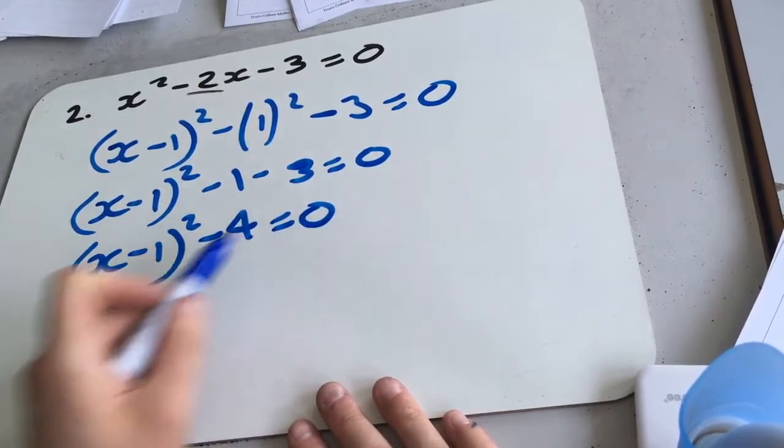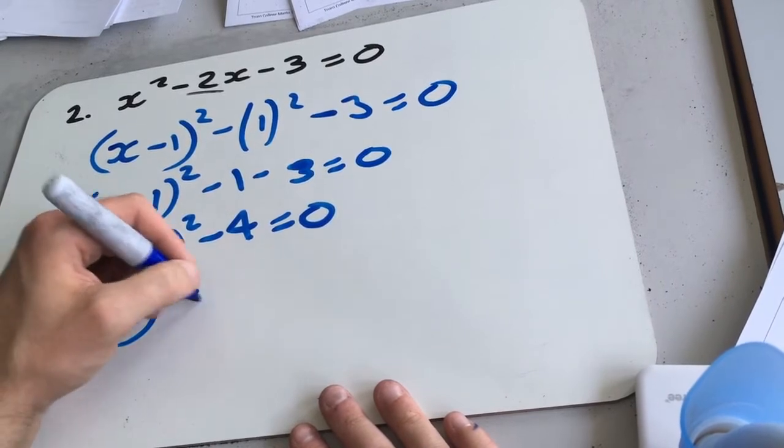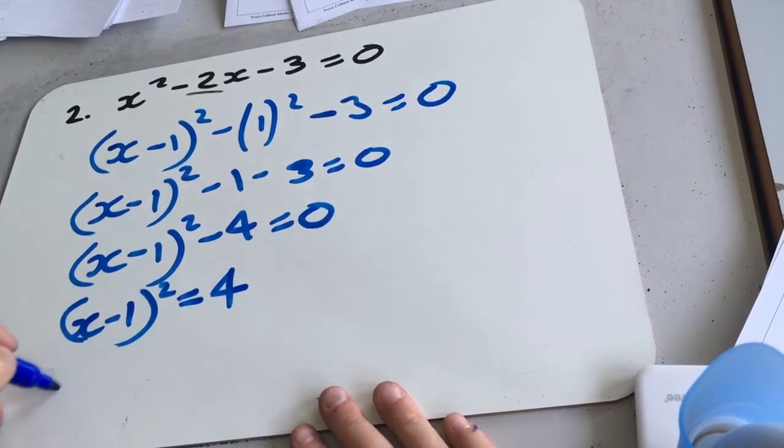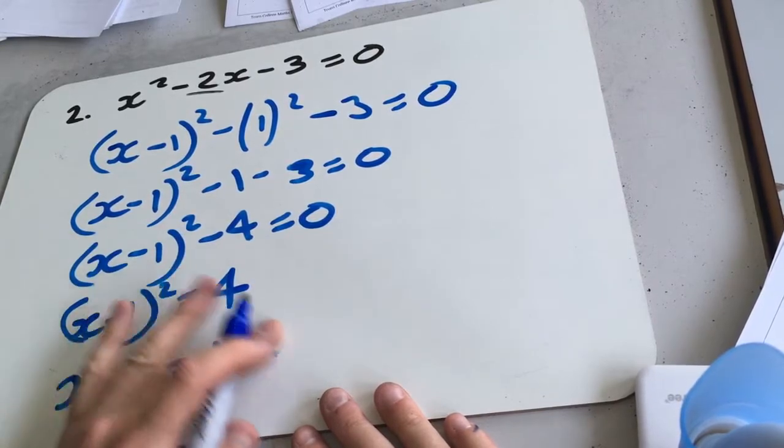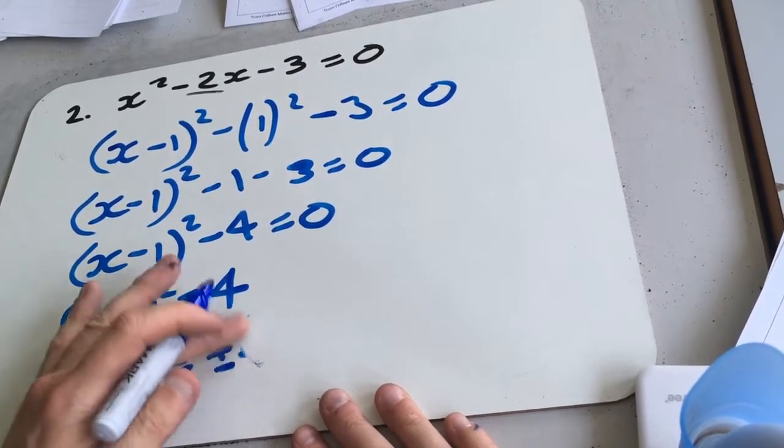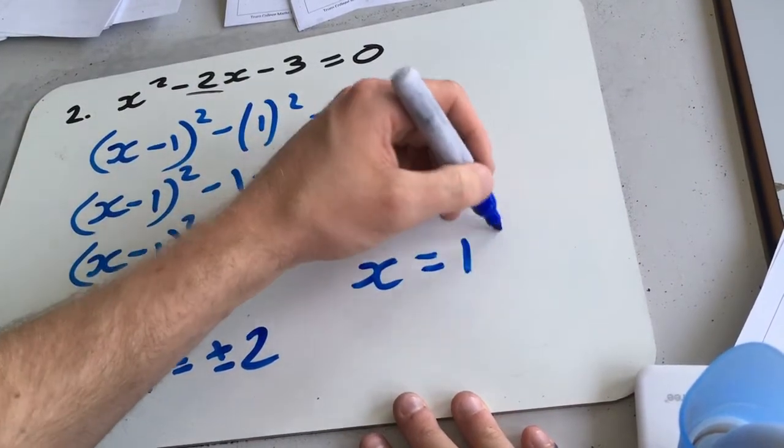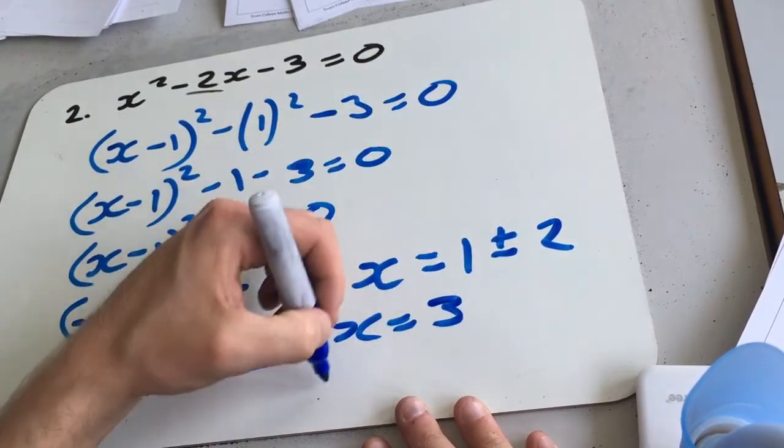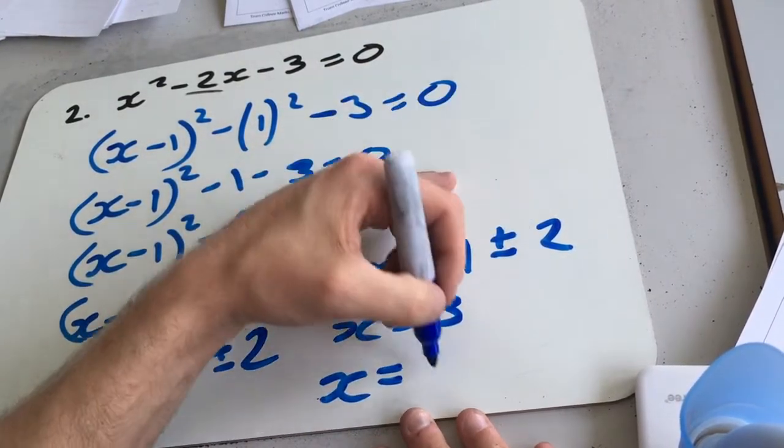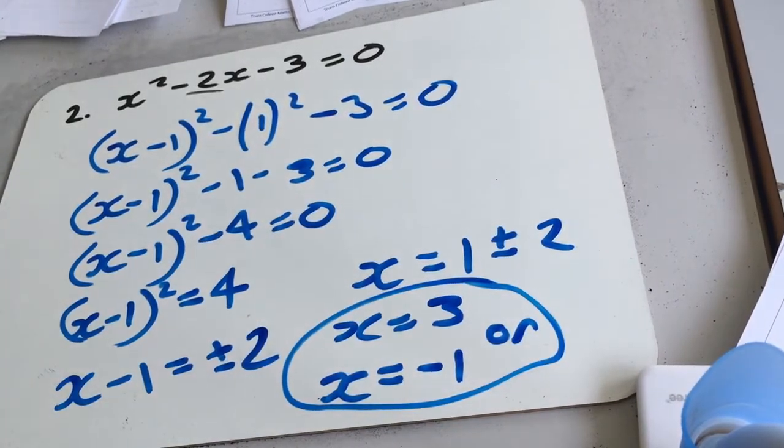Now we're going to solve it by rearranging to get x on its own. x minus 1 squared equals 4. Square root both sides. x minus 1 equals plus or minus 2. So x equals 1 plus 2 is 3, or x equals 1 minus 2 is minus 1.